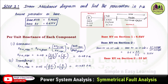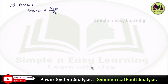For the transformer, X_pu(given) is 5% (0.05), kV_given with respect to primary is 6.6 kV, kV_new at section 1 is 6.6 kV, MVA_new is 5, and MVA_given for the transformer is 3 MVA. So 0.05 × (6.6/6.6)² × (5/3) = 0.083 per unit.